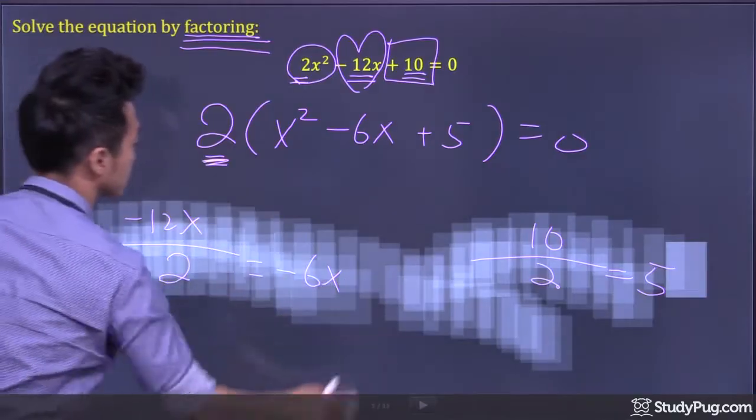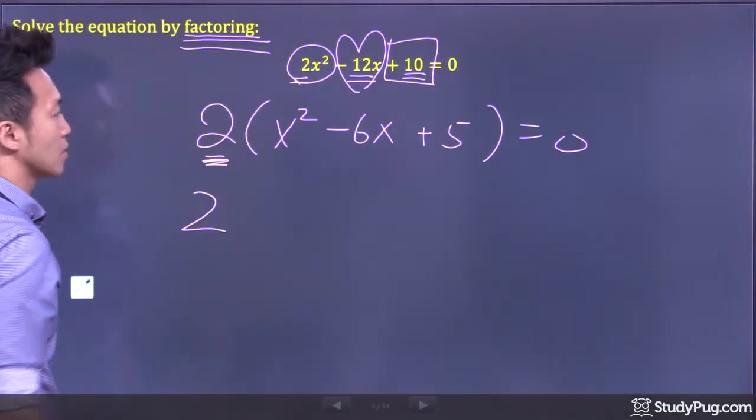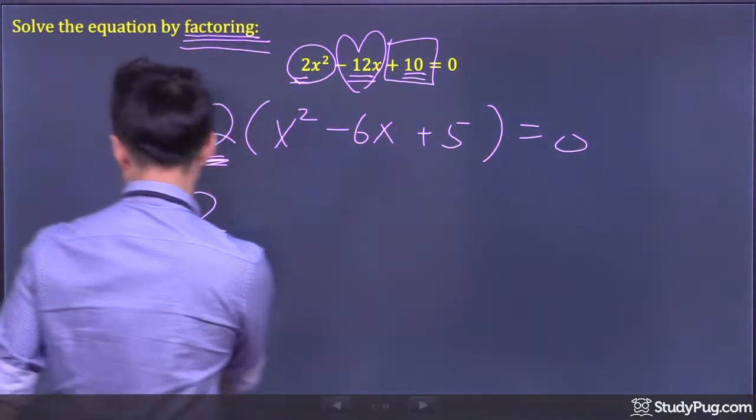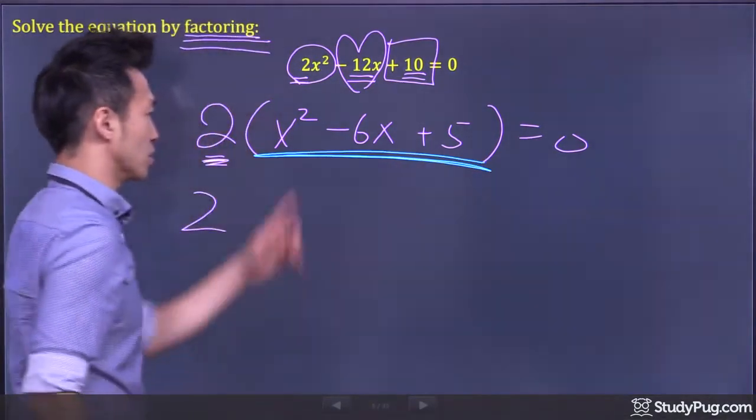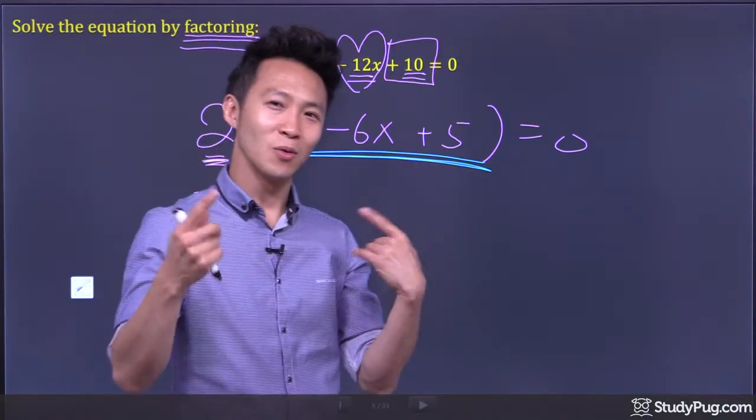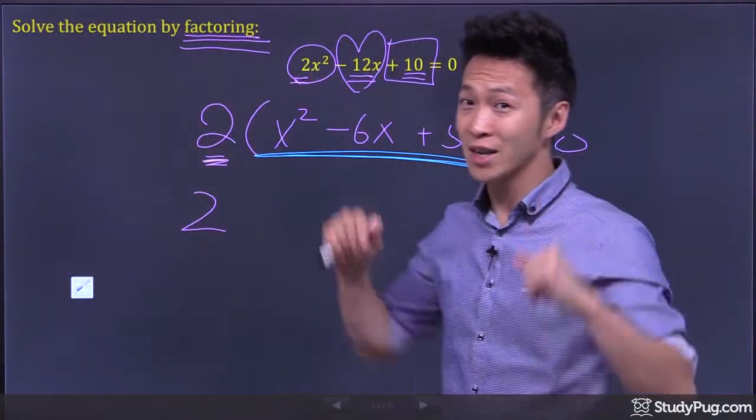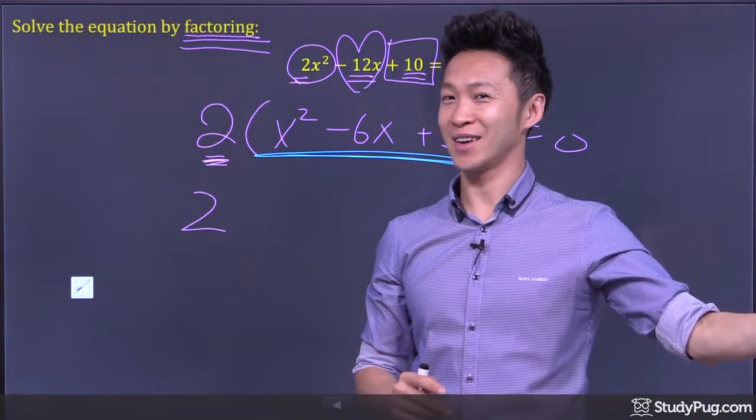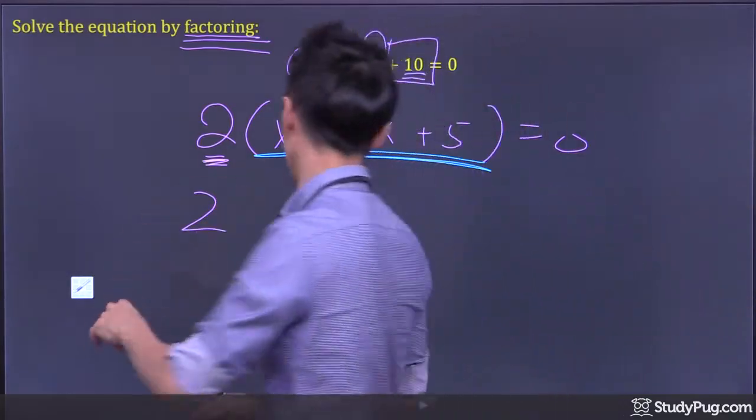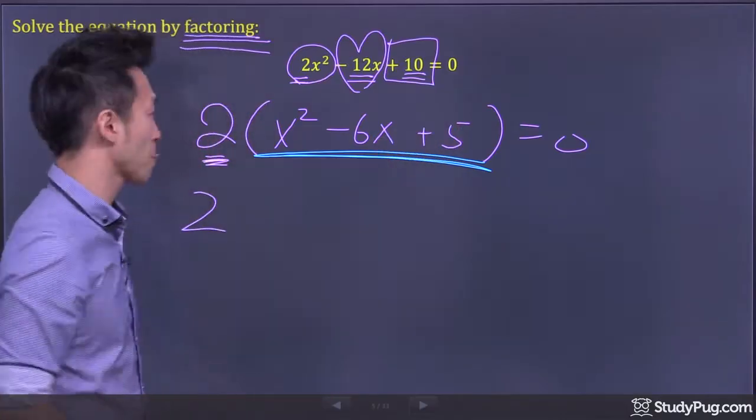Now, how do we factor this trinomial inside the bracket? Do you remember a very powerful technique called cross multiply, then check? So let's use that technique to factor this trinomial.